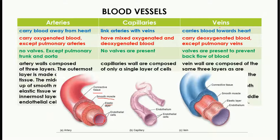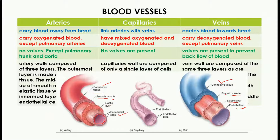In the case of veins, the outer layer is also connective tissue — the same as arteries. But the smooth muscle and elastic layer is very thick in arteries and very thin in veins. The internal layer in both is endothelium. The capillary is a single layer of endothelial cells, responsible for the transport of minerals and food molecules.